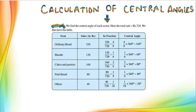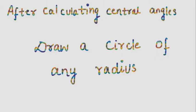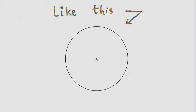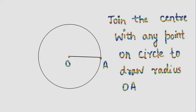After the calculation of central angles, let us first draw a circle of any radius. You can draw a circle of any radius like this. Mark its center and write it as radius OA.